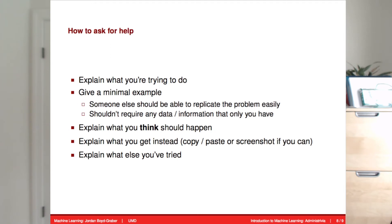When you ask for help, try to be effective in asking for help. One problem that we often see, especially for programming assignments, is that people say something like 'my back prop doesn't work.' It's hard to understand what the actual problem is. Give an example of what you're trying to do and make it a minimal complete example — that is, someone should be able to replicate the problem that you're seeing. Also explain what you expect to see instead. Say what you think is happening and what should be happening, because sometimes the misunderstanding is the root issue and if you don't state your assumptions, we won't be able to figure out that problem.